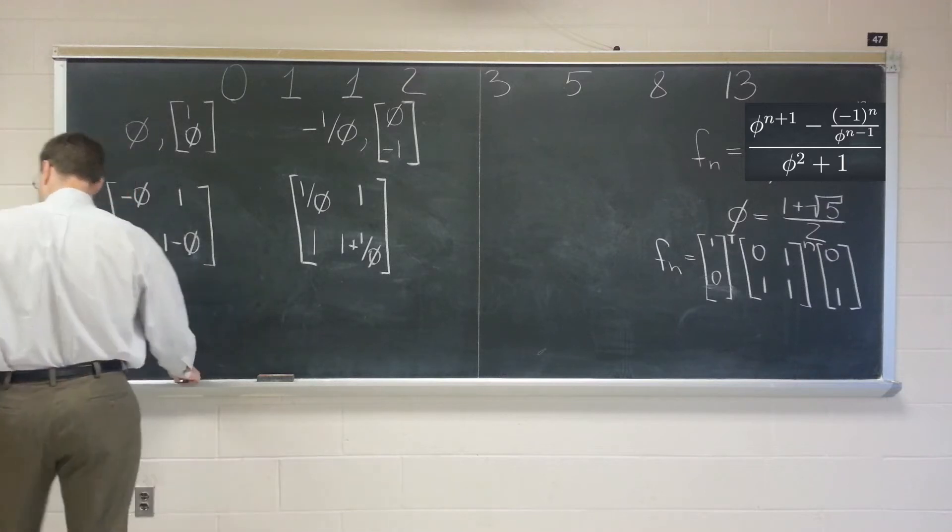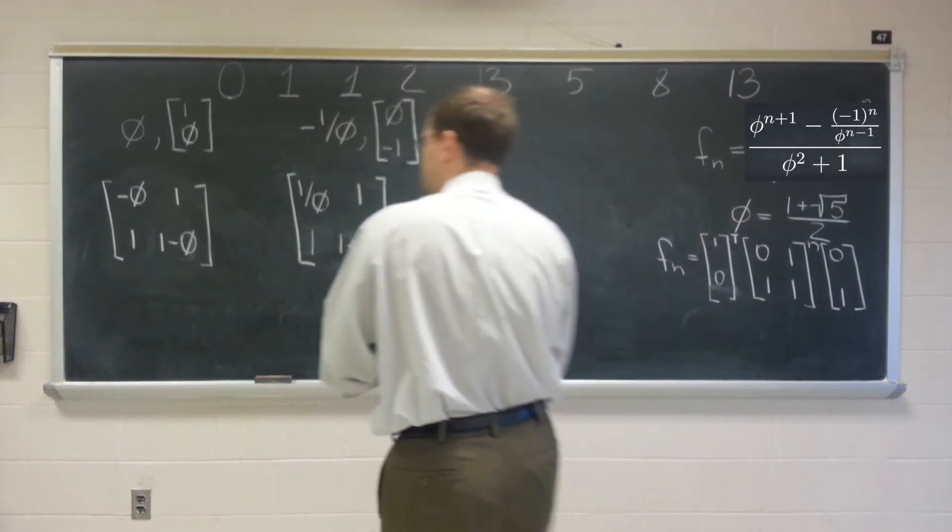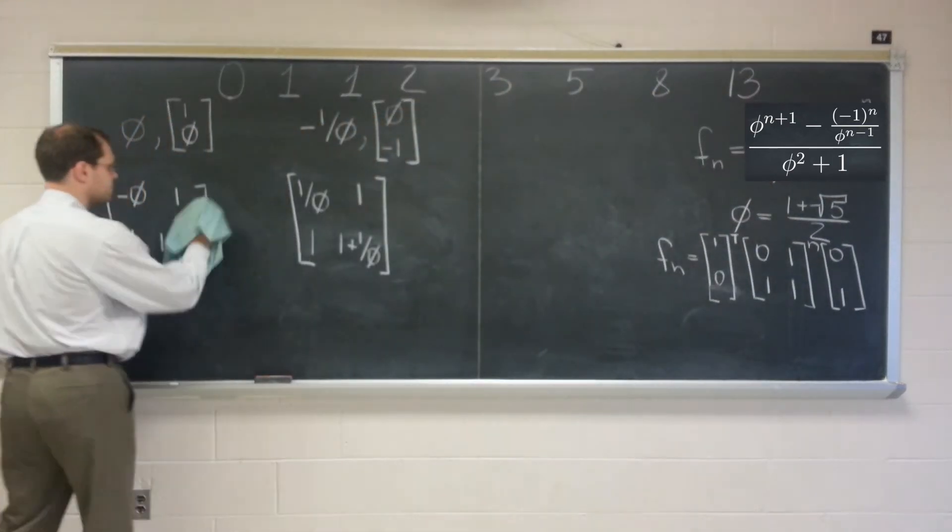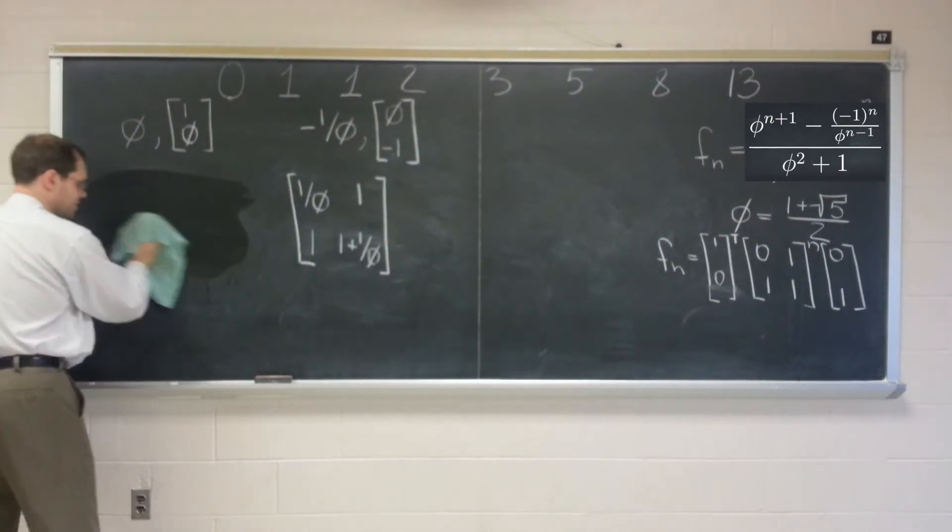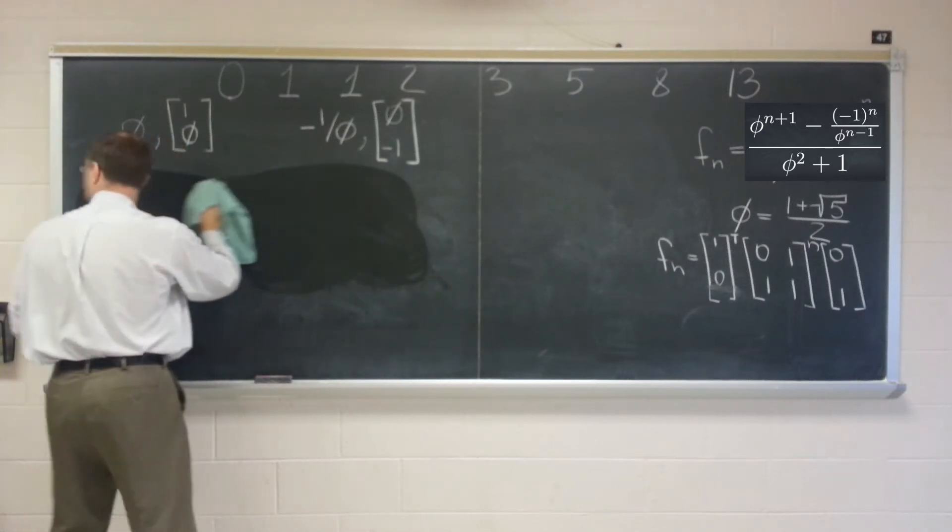So now we have our eigenvectors, our eigenvalues, and our eigenvectors. So we can now write the eigenvalue decomposition for the matrix A.